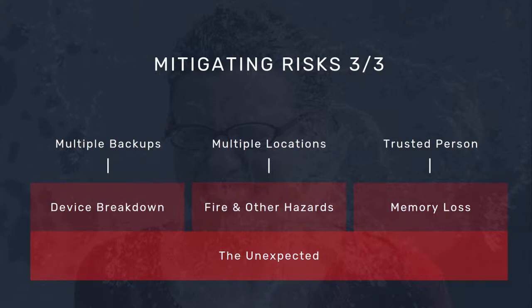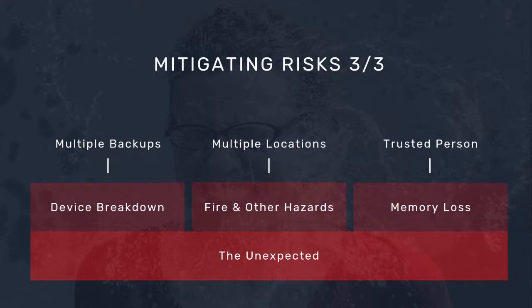A lot of people use so-called brain wallets, which means they just memorize the keys or the seed words to unlock the wallet. This can be considered very secure, but there's always the risk that you simply forget. You might end up in an accident and forget what the passphrase was. Of course, death could also result in loss of funds, which you then couldn't pass on to your relatives or friends.